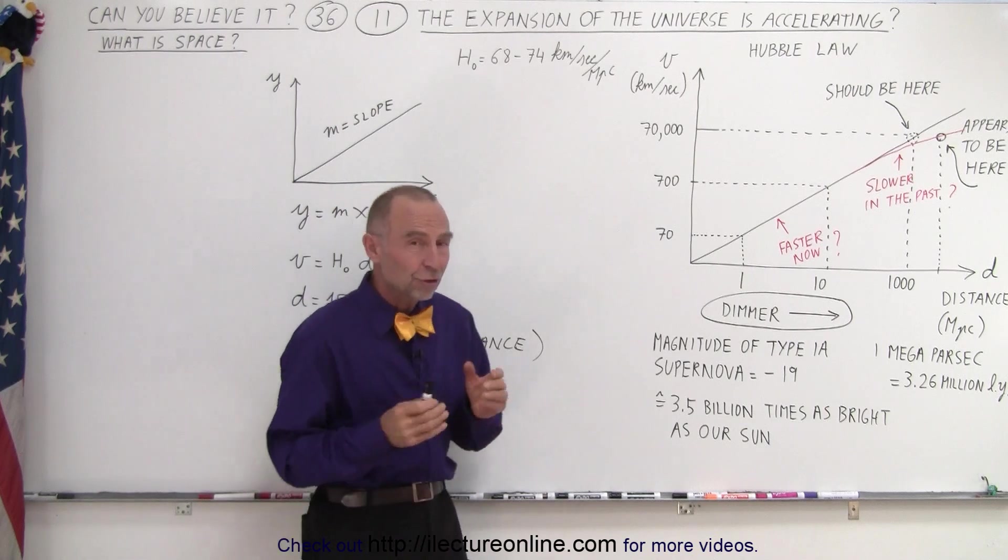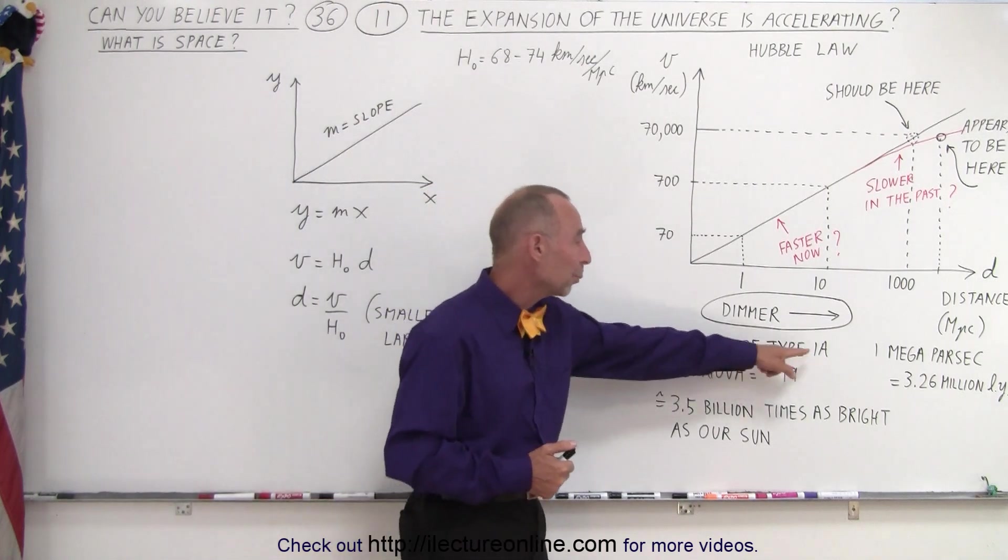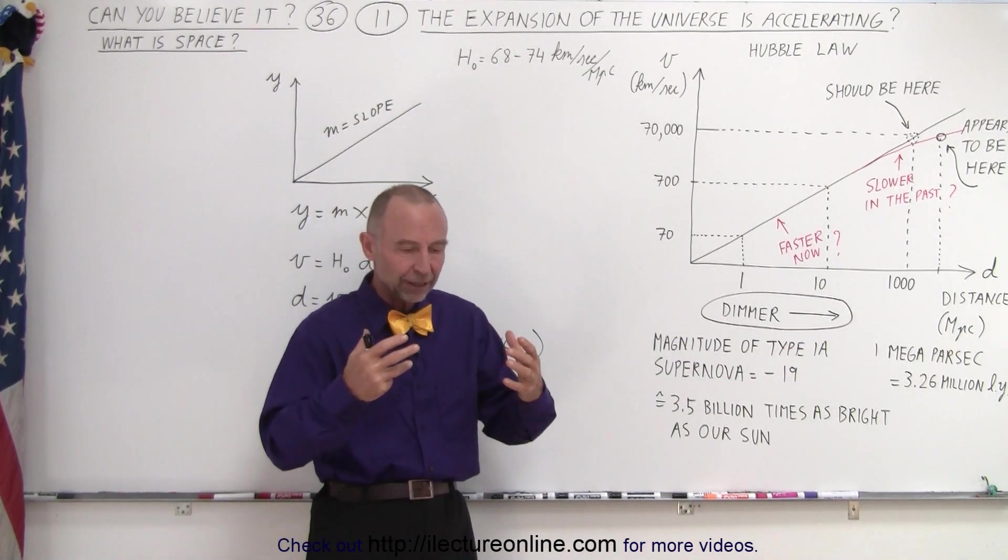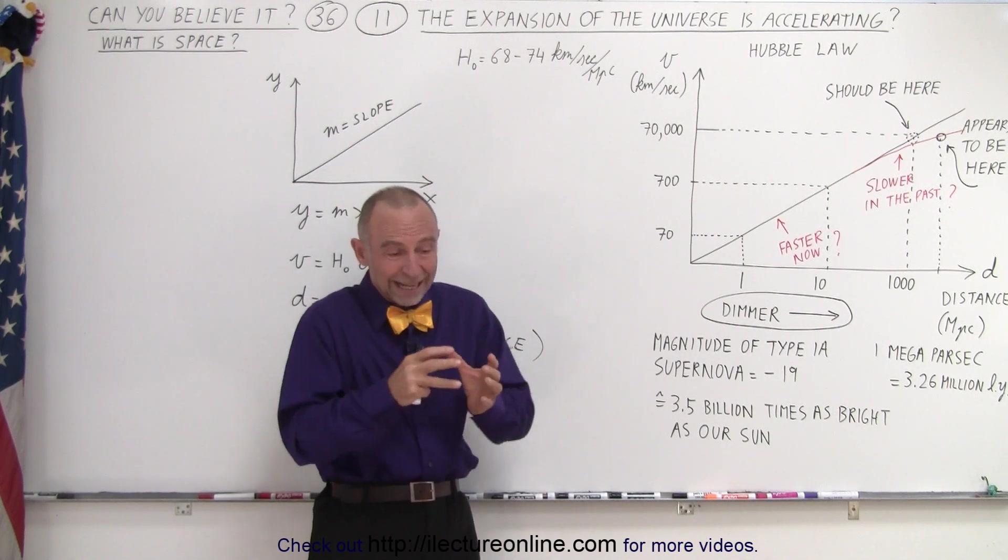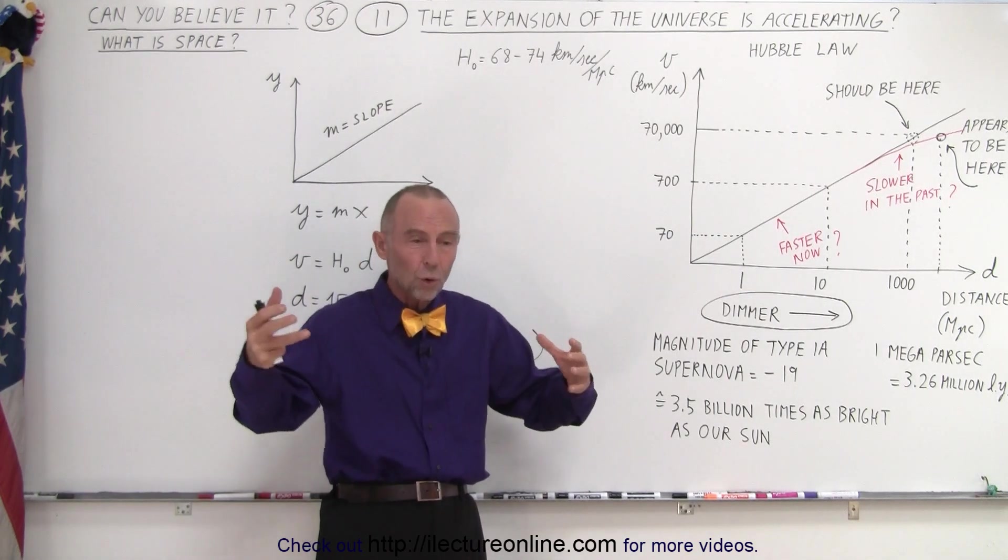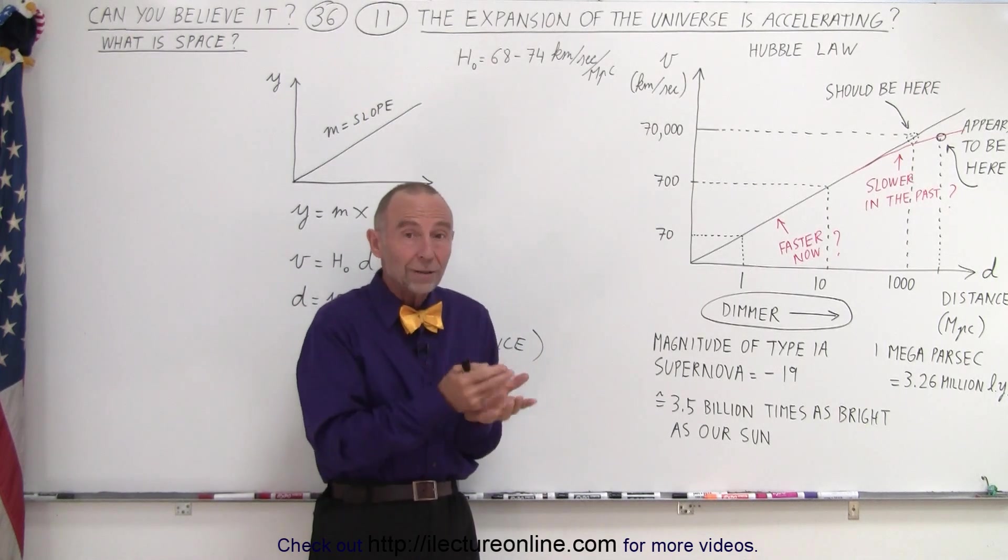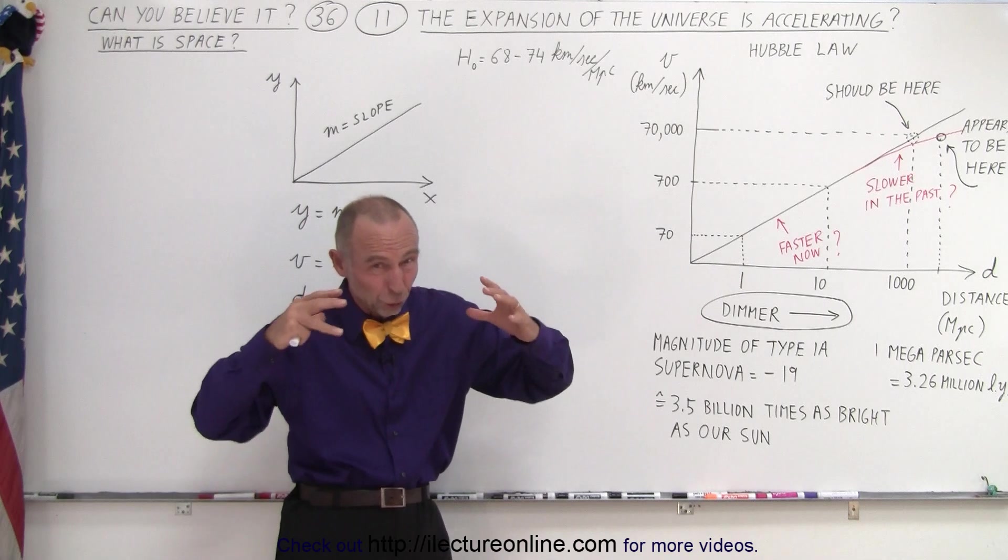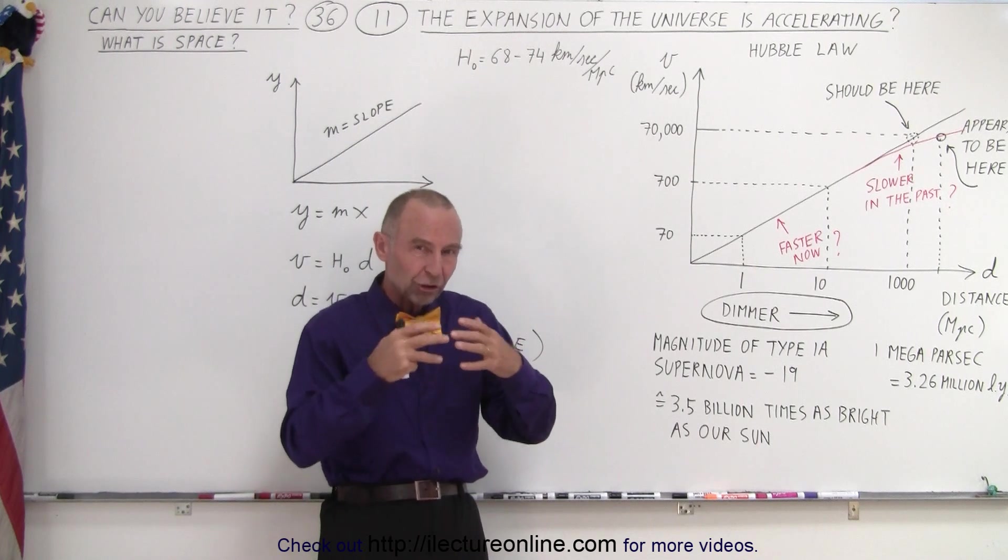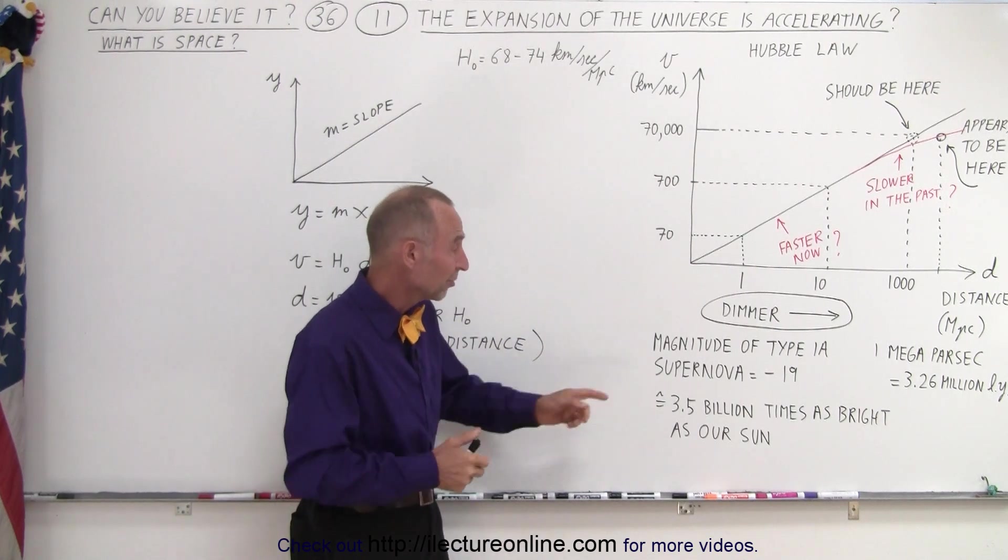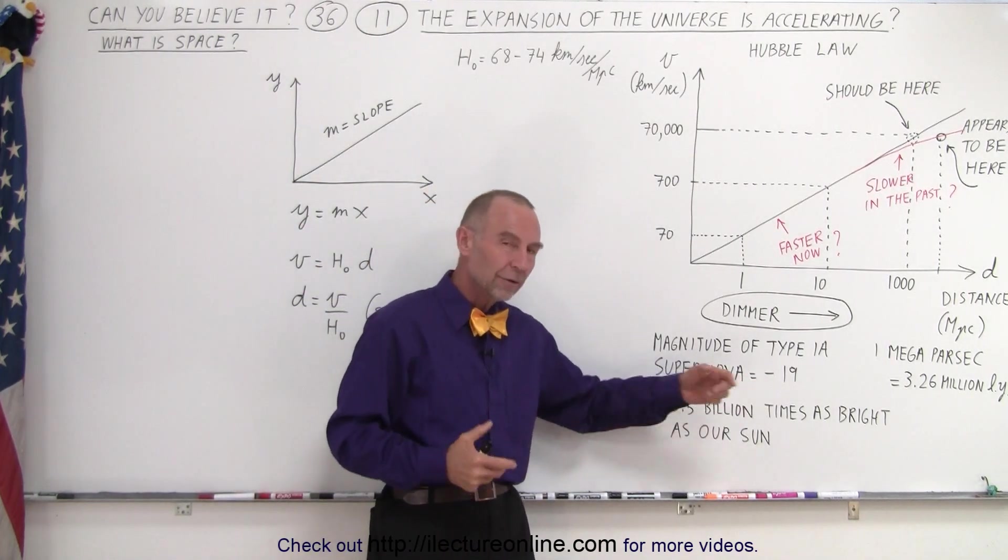To verify this, we look at Type 1a supernovas. These occur when the core of a dying star exceeds a certain mass limit. Sometimes cores pull in mass from nearby stars. When they exceed 1.4 times the mass of the sun—the Chandrasekhar limit—they explode in an enormous explosion.